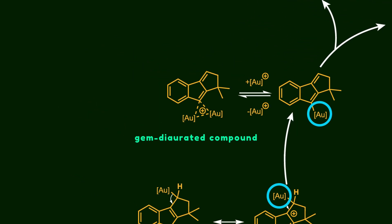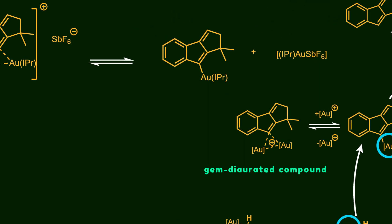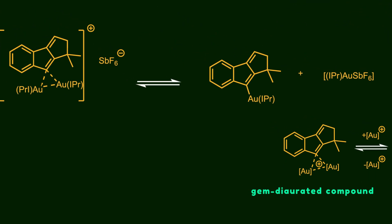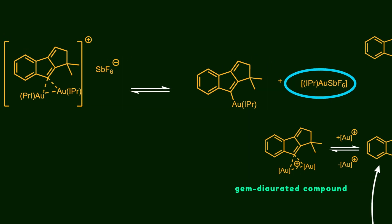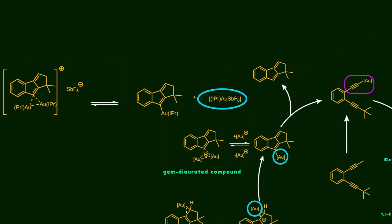This equilibrium is important because the di-aurated compound produces both the mono-gold species and activated gold catalyst in a 1-to-1 ratio. As a result, the activated catalyst can initiate another catalytic cycle.